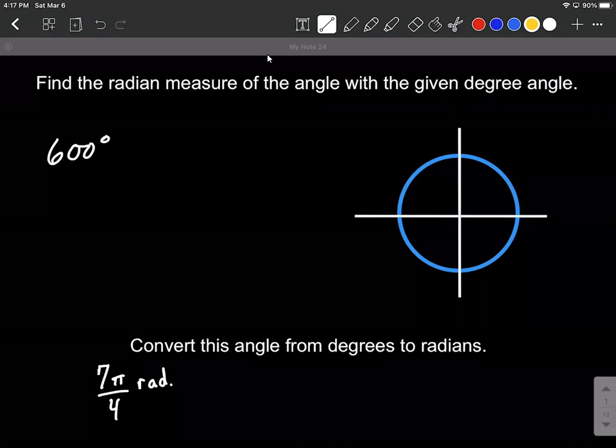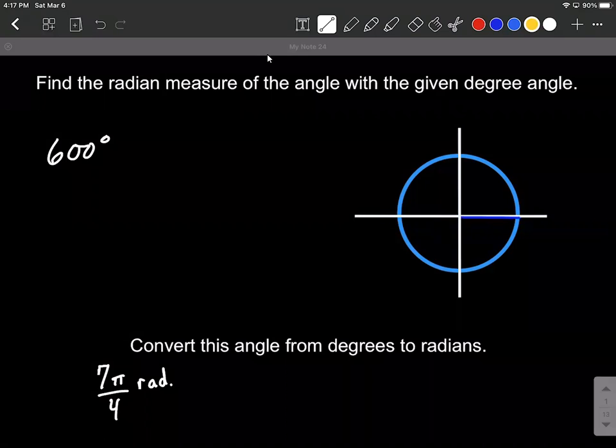But the big thing to remember is that if we start with the initial side going out the x-axis from the origin and rotate all the way around a circle and end up in the exact same initial position, the important thing to remember is that that's 360 degrees, but it's also equal to 2 pi radians.